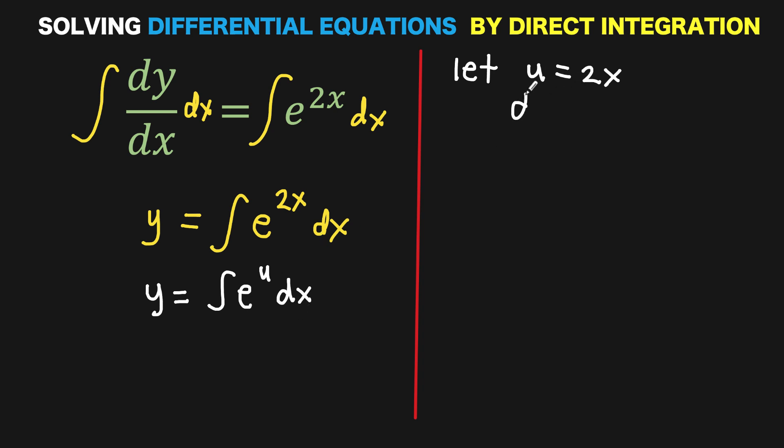So from here, let's find du over dx, which equals the derivative of 2x, which equals 2. What we want is an expression for dx. Technically, du over dx is not a fraction.